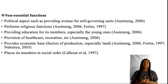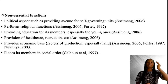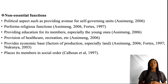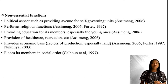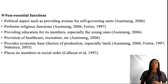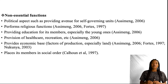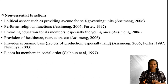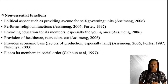It is also the responsibility of the family to provide a home for its members — provide shelter, emotional and financial support, and all other forms of support necessary for the survival of their members. And what are the non-essential functions of the family? The non-essential functions include providing avenue for self-governing units, performing religious functions for their members, providing education for its members, health care, recreation, and entertainment.